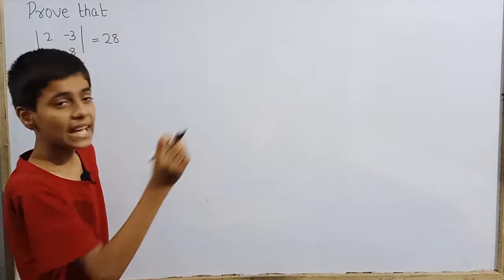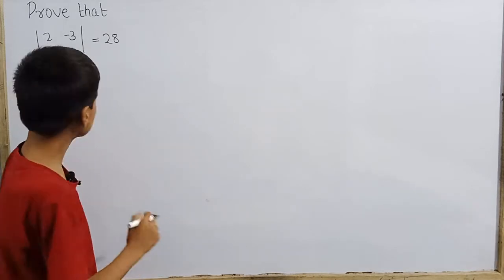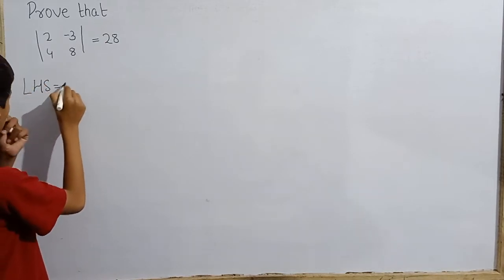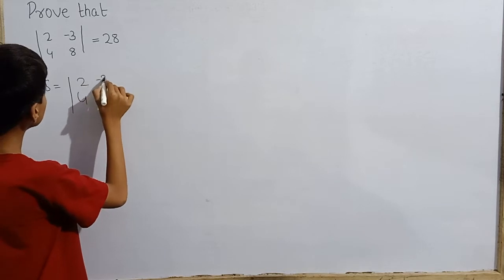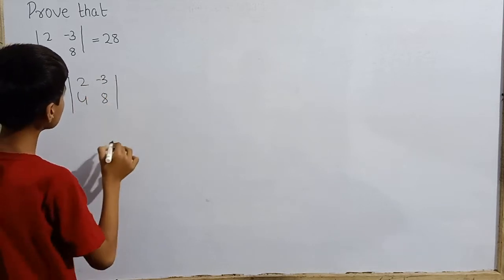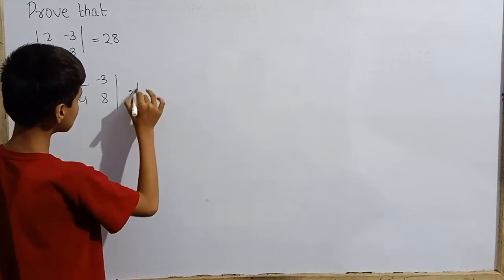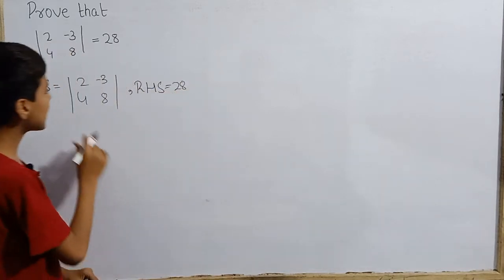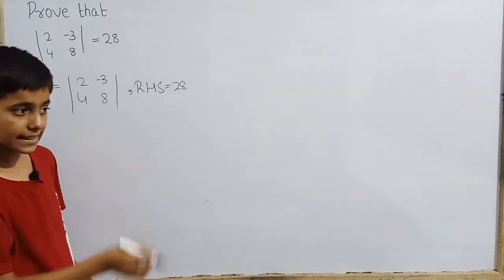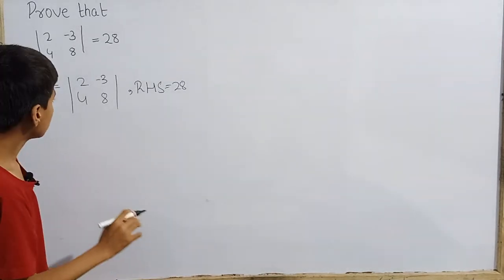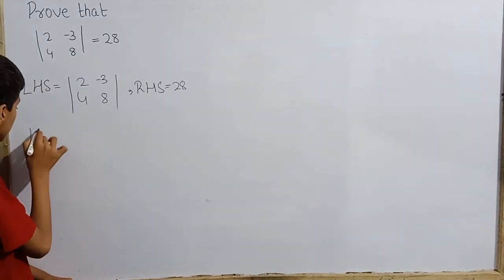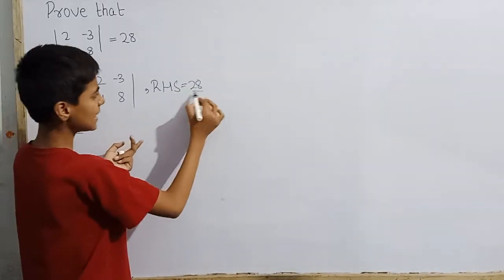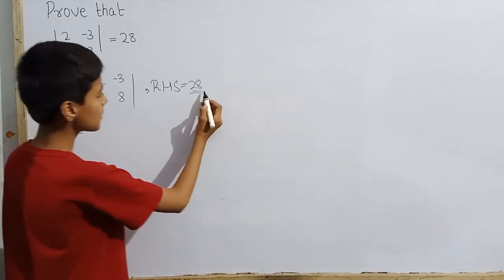Now basically for proving, what do you do? We have LHS and RHS equal to prove. Here I have left hand side as this determinant right here. Right hand side I have 28. Let me tell you that LHS and RHS are equal to one another. For this, first I will solve it and if its final value is just like 28, we will know whether it is or it is not.